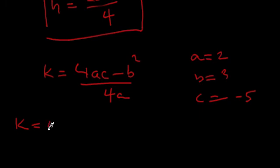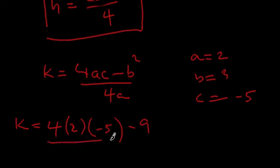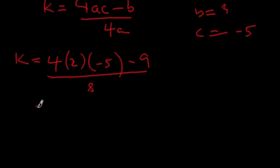k = 4 times 2 times c, which is -5, minus b², which is 9, over 4a, which is 8. So we have (8 times -5) - 9, which is -40 - 9 = -49, over 8. k = -49/8.